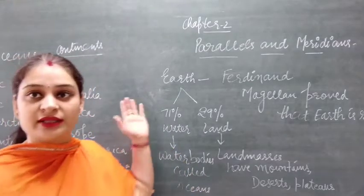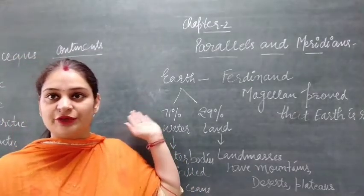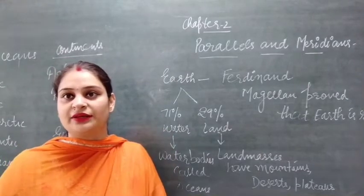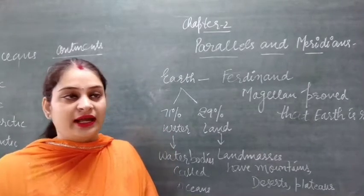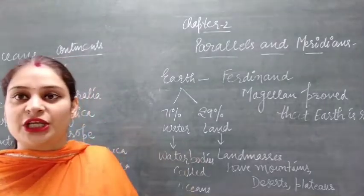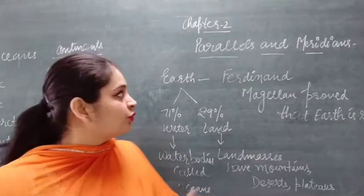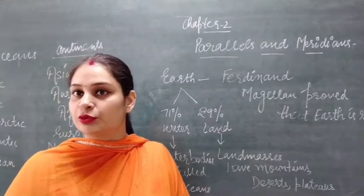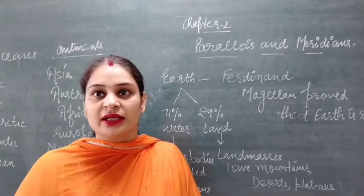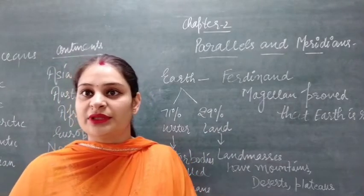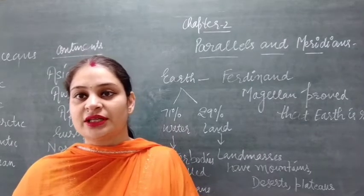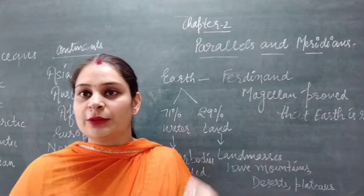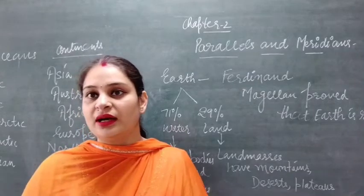We discussed that we all live on earth, as earth is the only planet where life exists. We all know that the shape of the earth is round. Ferdinand Magellan was the first to prove that the earth is round — he sailed around the world and after three years reached the same point from which his ship started, proving earth is round.